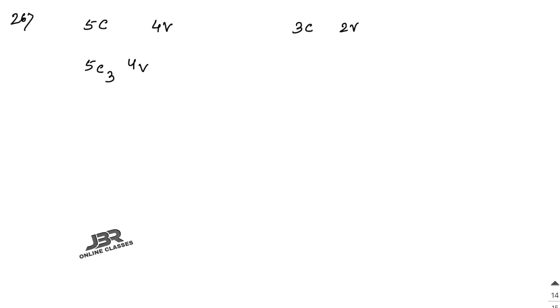Sum number 26: How many words can be formed out of five different consonants and four different vowels, if each word is to contain three consonants and two vowels? So here you have five consonants and four vowels. This means 5C3 (choosing three consonants from five) and 4C2 (choosing two vowels from four).